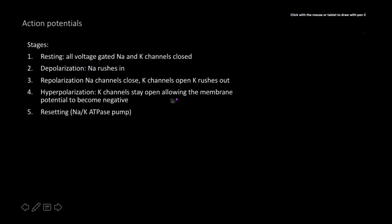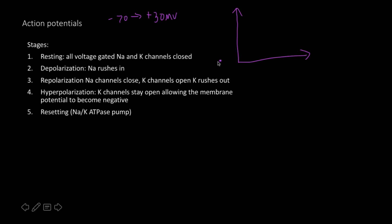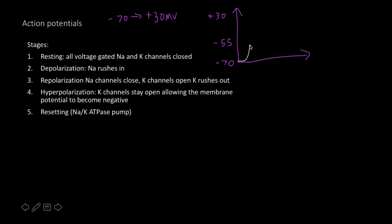Let's talk about the details of those spikes. We go from around negative 70 millivolts to positive 30 millivolts during an action potential. Starting at negative 70, which is resting membrane potential, graded potentials build up. Up until about negative 55 it's possibly reversible, but once we reach negative 55 — called threshold — sodium channels open.